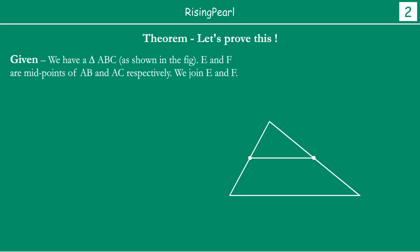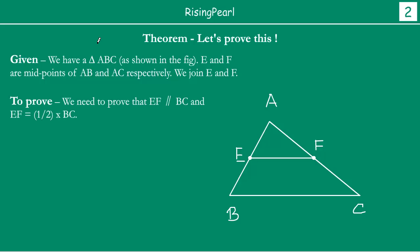Let us write what is given. We have triangle ABC. E and F are midpoints of AB and AC respectively. We join EF. We need to prove that EF is parallel to BC, and EF is equal to half of BC.